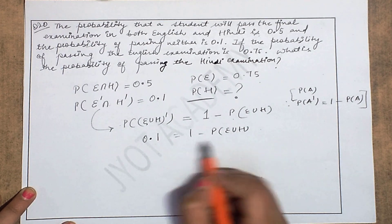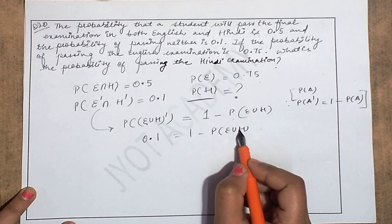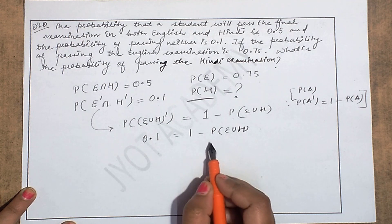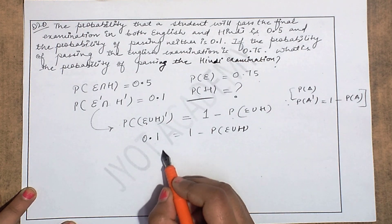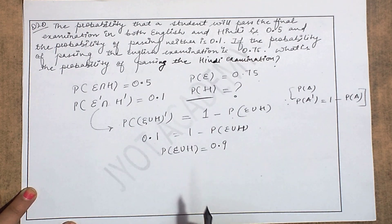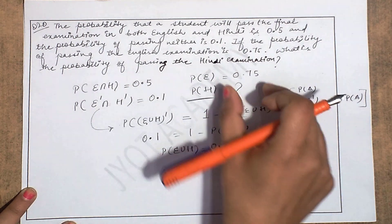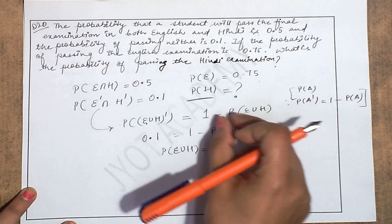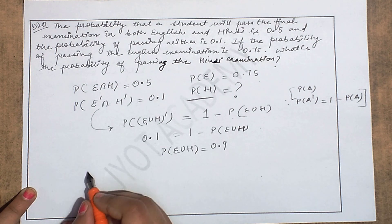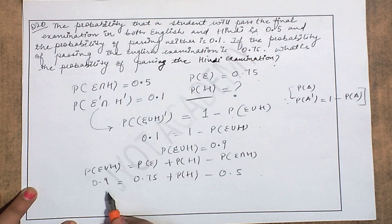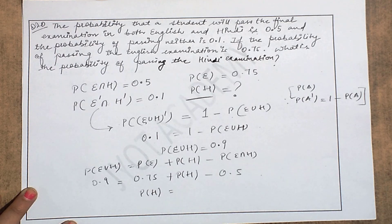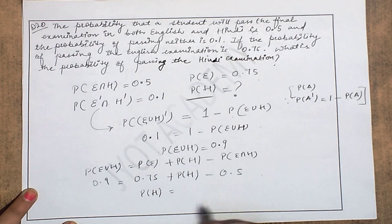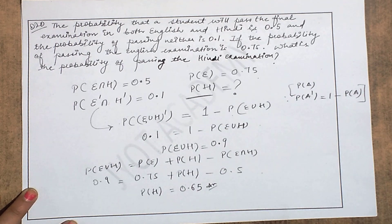From here we can clearly find P(E ∪ H) = 0.9. We know P(E) = 0.75 and P(E ∩ H) = 0.5. Applying the formula P(E ∪ H) = P(E) + P(H) − P(E ∩ H), solving gives P(H) = 0.65 as your answer.